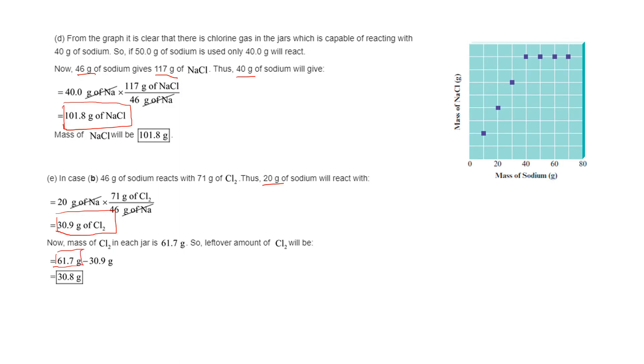We calculated earlier in part C the mass of chlorine. If you use 20 grams of sodium, then you're going to need this amount of chlorine, so the difference becomes the excess. Thank you very much.